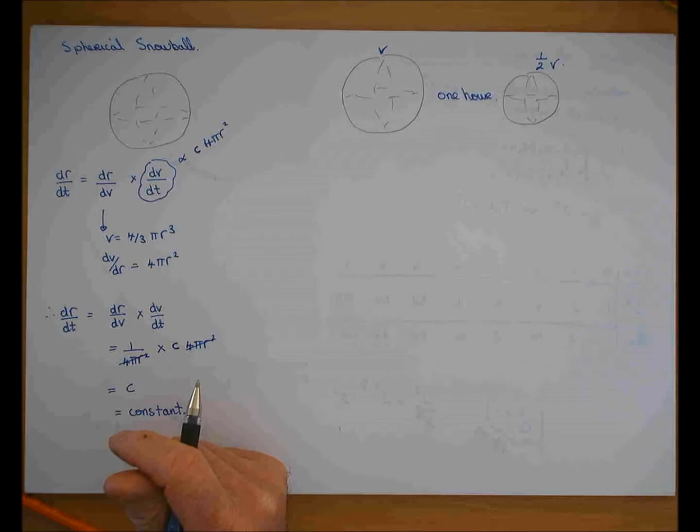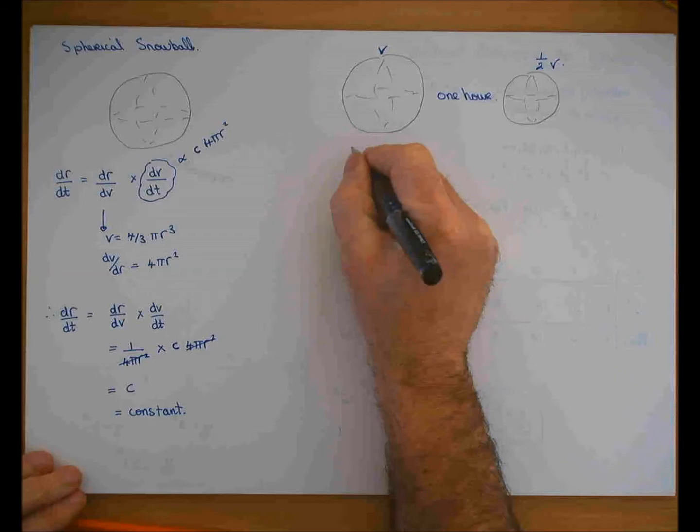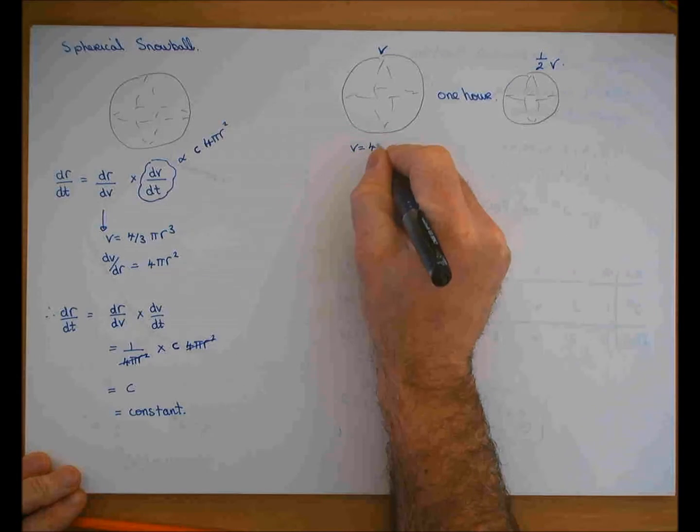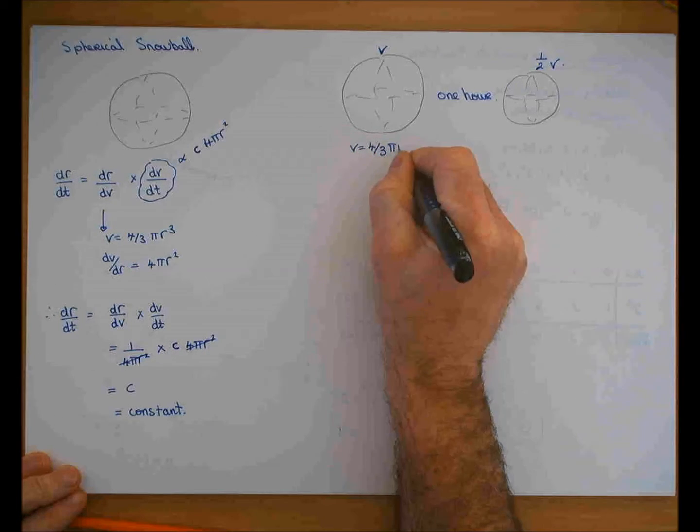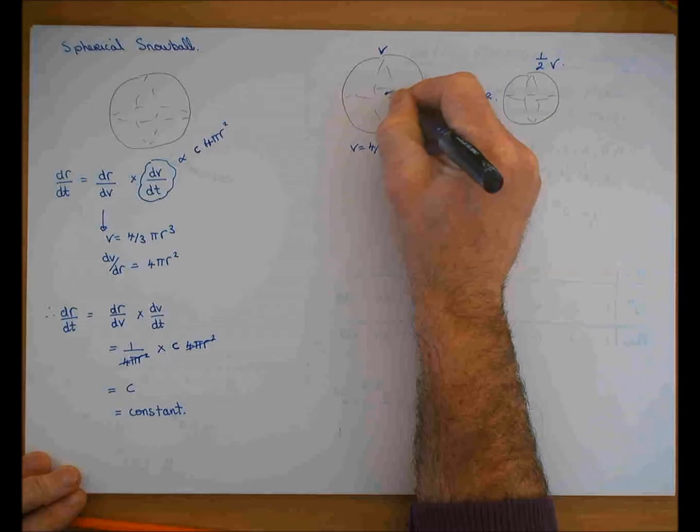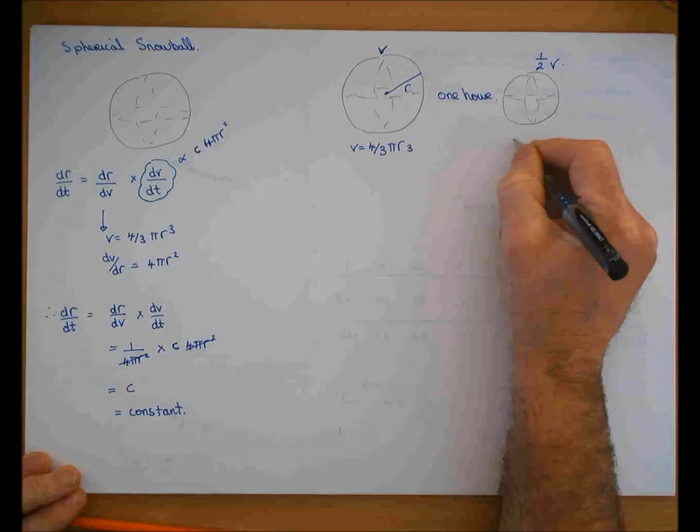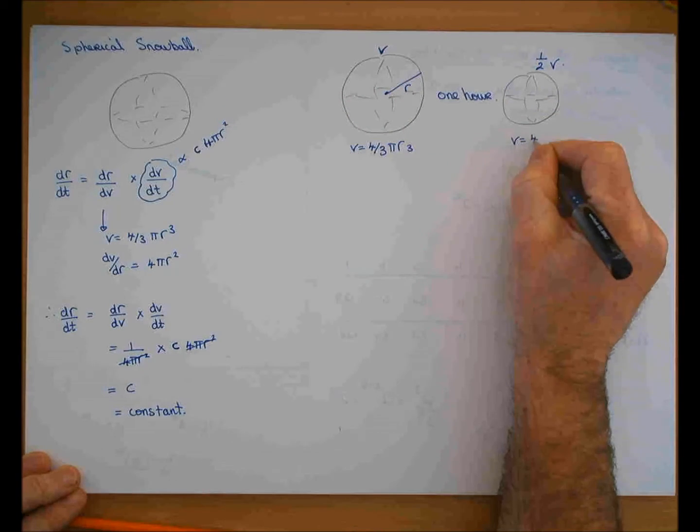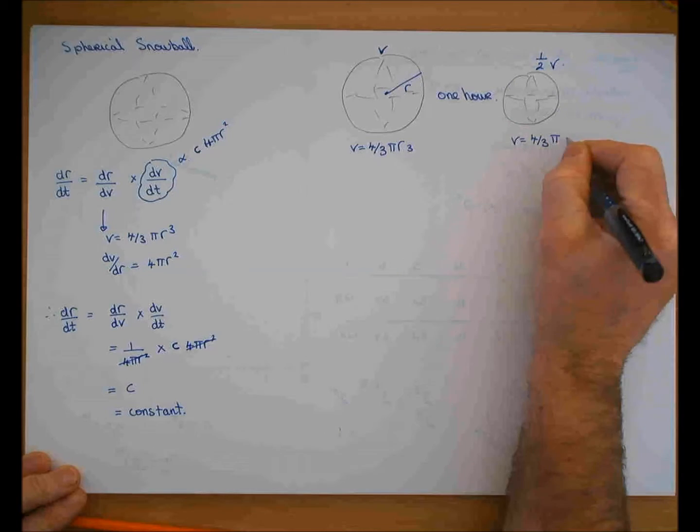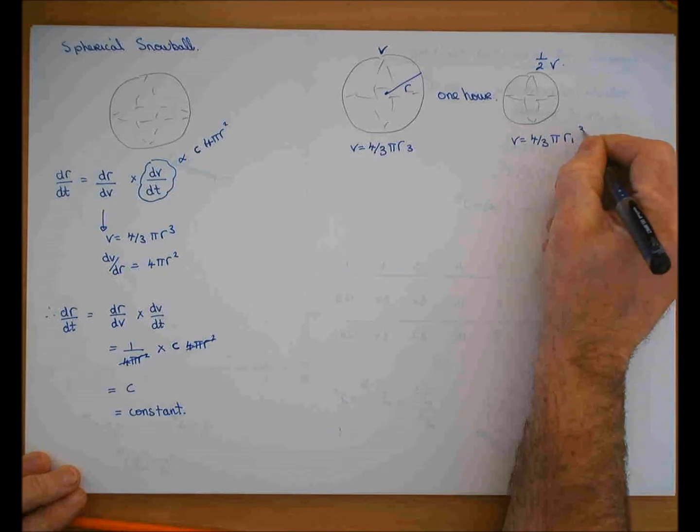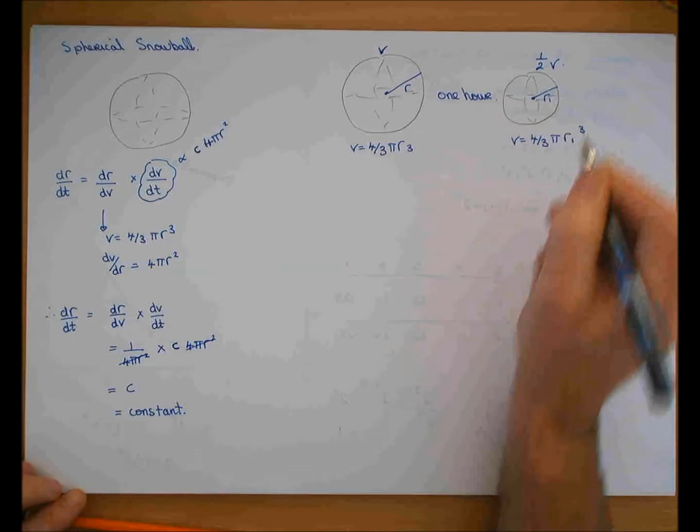How long will it take for it to melt completely? Well, if it loses half its volume in one hour, what has happened to the radius? Here its volume is equal to 4/3πr³ if that's its radius. And here the volume is 4/3π, we'll say r₁ cubed, for that is r₁.